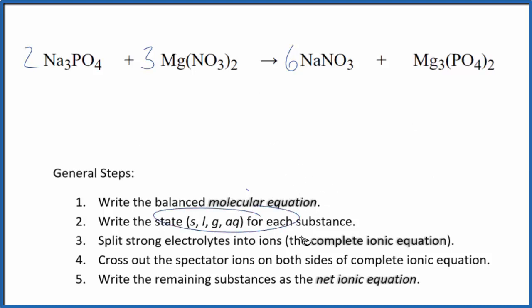Next we need to write the state for each substance. Sodium compounds are very soluble, they'll dissolve in water, that's aqueous. Nitrates very soluble, so we put aq, that'll dissolve and dissociate. Sodium nitrate soluble, but let's take a look at this magnesium phosphate.